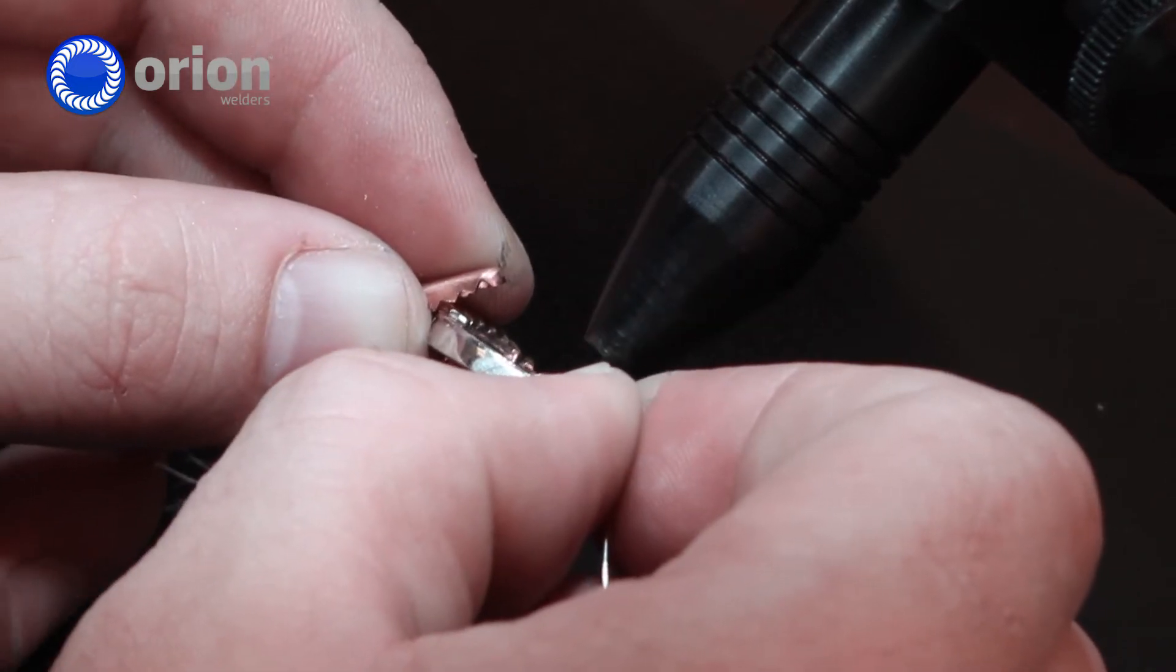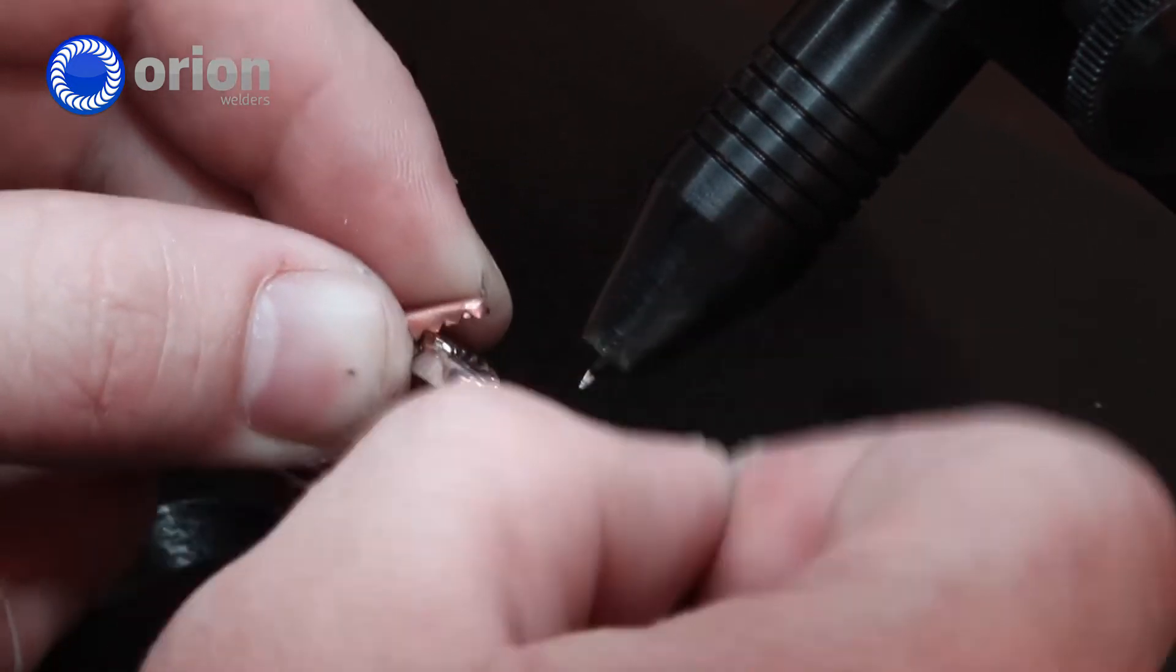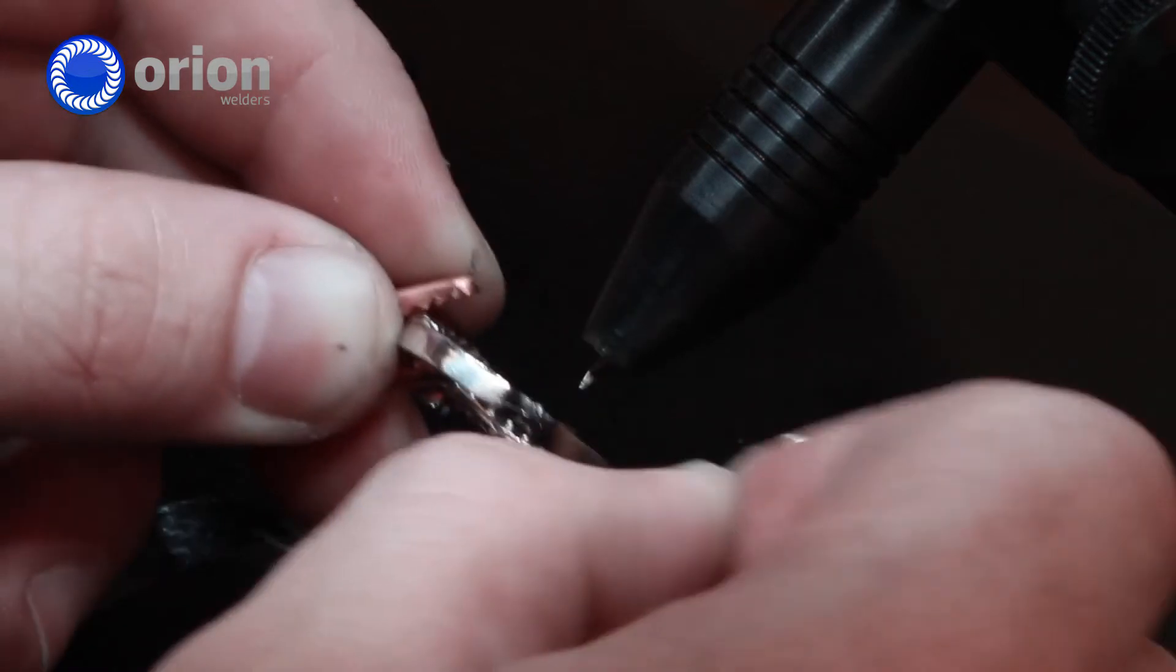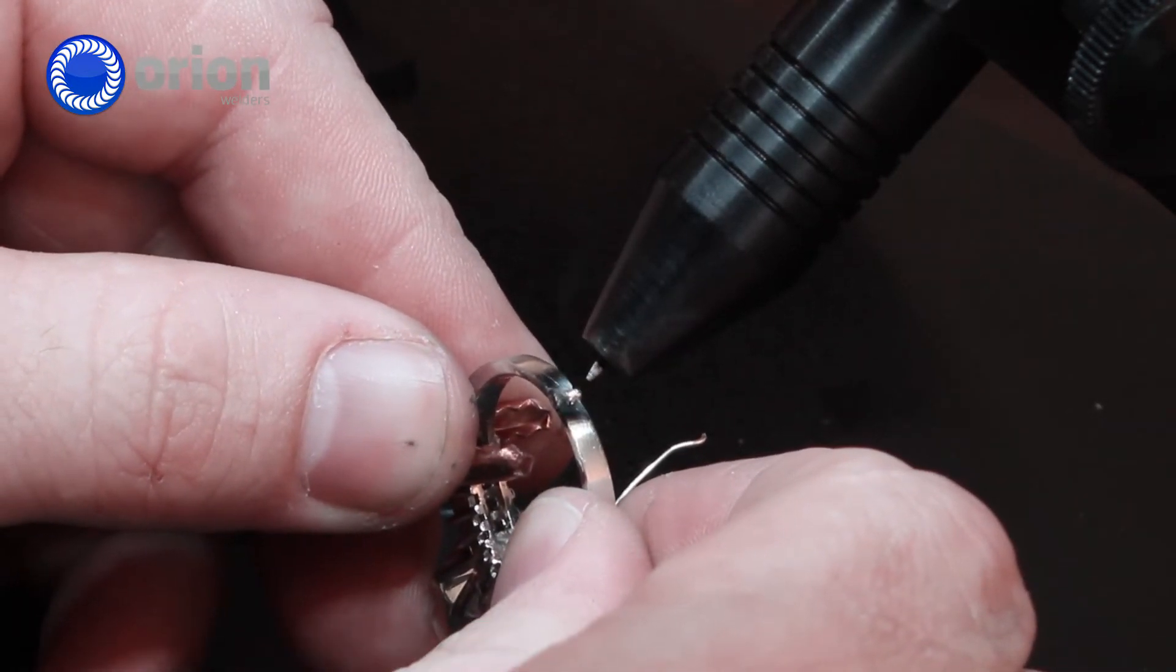So a typical ring resize with the Orion can take as long, or sometimes even longer, than a resize that you would do with your torch.